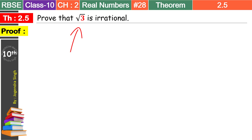Root 2 को कैसे irrational prove करते हैं, यह मैंने last theorem में बताया था। अब हमारे पास number है root 3। तो इस तरह की numbers जो under root में prime numbers हों, इनको अगर हमें irrational prove करना हो, तो तरीका क्या है?